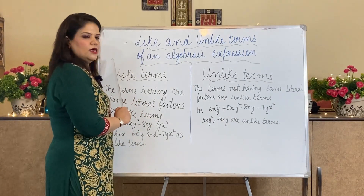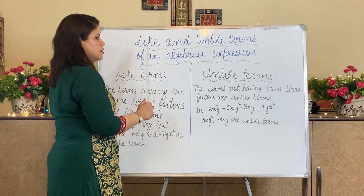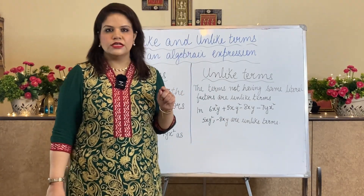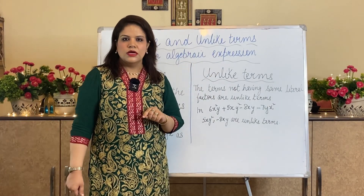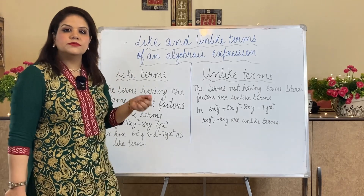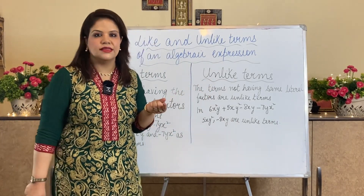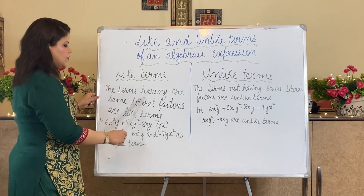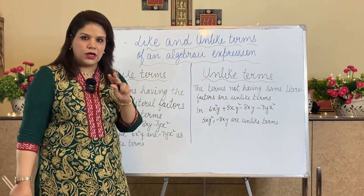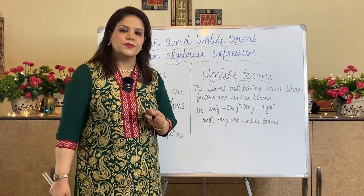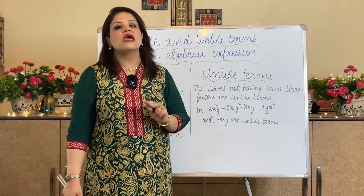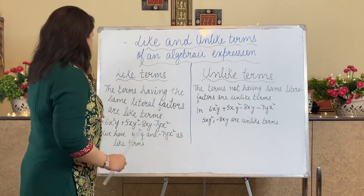The first topic is like and unlike terms of an algebraic expression. What are like and unlike terms? I have already explained what an algebraic expression is and what the terms in it are. Like — as the name suggests — means something is the same or similar. We have two types of factors: numerical factors and variable factors.